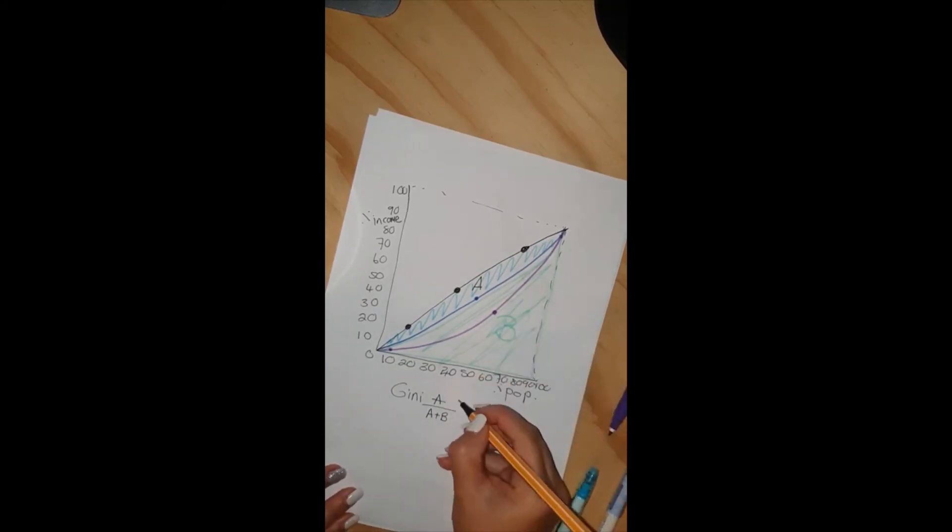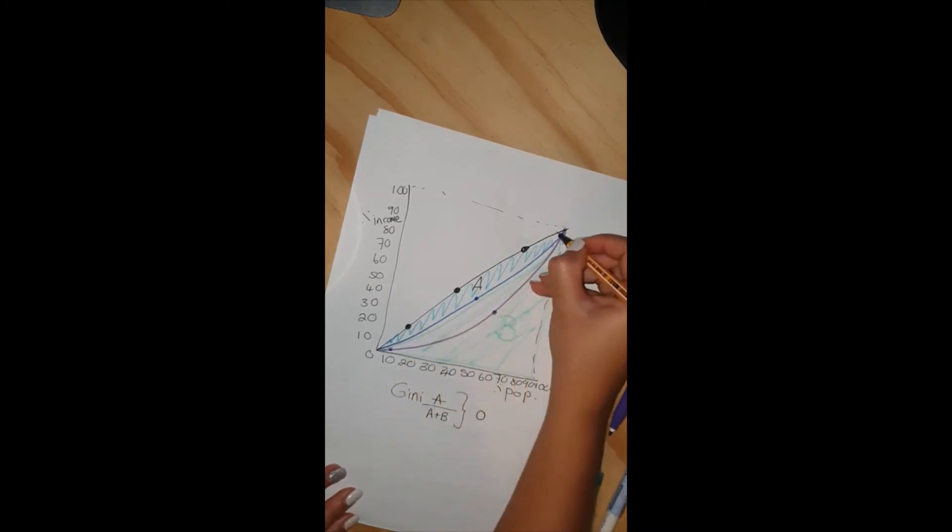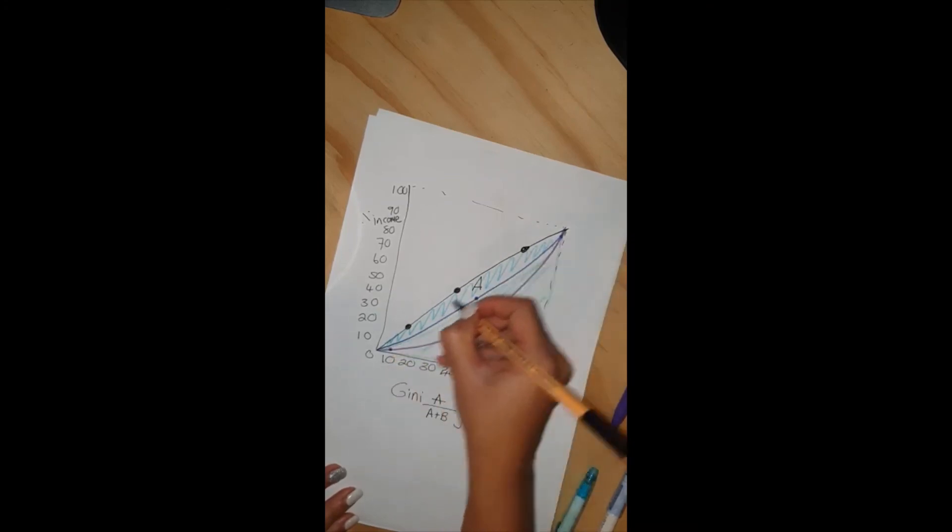Now the Gini coefficient, the answer will always lie between a value of 0, which indicates perfect equality, and a value of 1, which indicates perfect inequality. Neither of these two will ever happen.